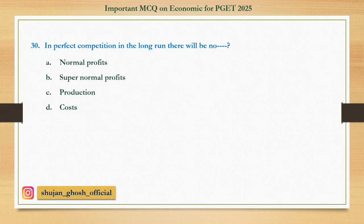Question number thirty: In perfect competition, in the long run there will be no — option A: normal profits; B: supernormal profits; C: production; D: cost. Answer: supernormal profits.